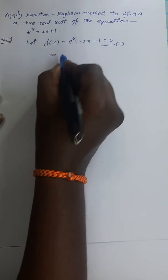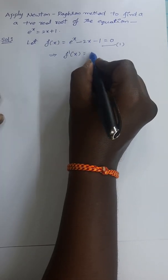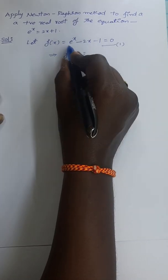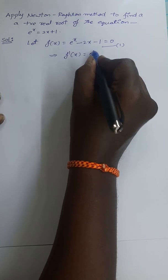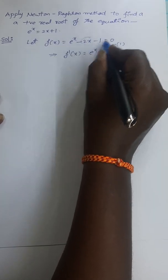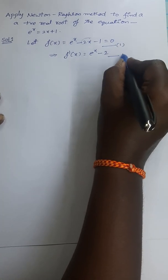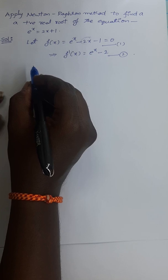In the Newton-Raphson method, we immediately have to find f'(x). The differentiation of e^x with respect to x is e^x, minus the derivative of 2x which is 2, and the derivative of the constant is 0. So f'(x) = e^x - 2. We can take this as equation number 2.